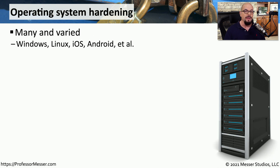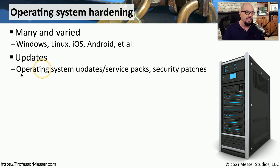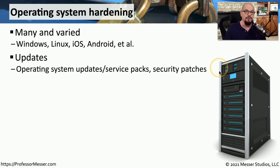In your environment, there will be many different operating systems in use. You might be running Windows, Linux, macOS, Android, iOS, and many others. There are many hardening guides available that are specifically written for these operating systems. Very commonly, these hardening guides include a section on updates, making sure that you're running the latest operating system updates, or in the case of Windows, the latest service packs. There are often security patches required for all of these operating systems, so it's important to always stay up to date.